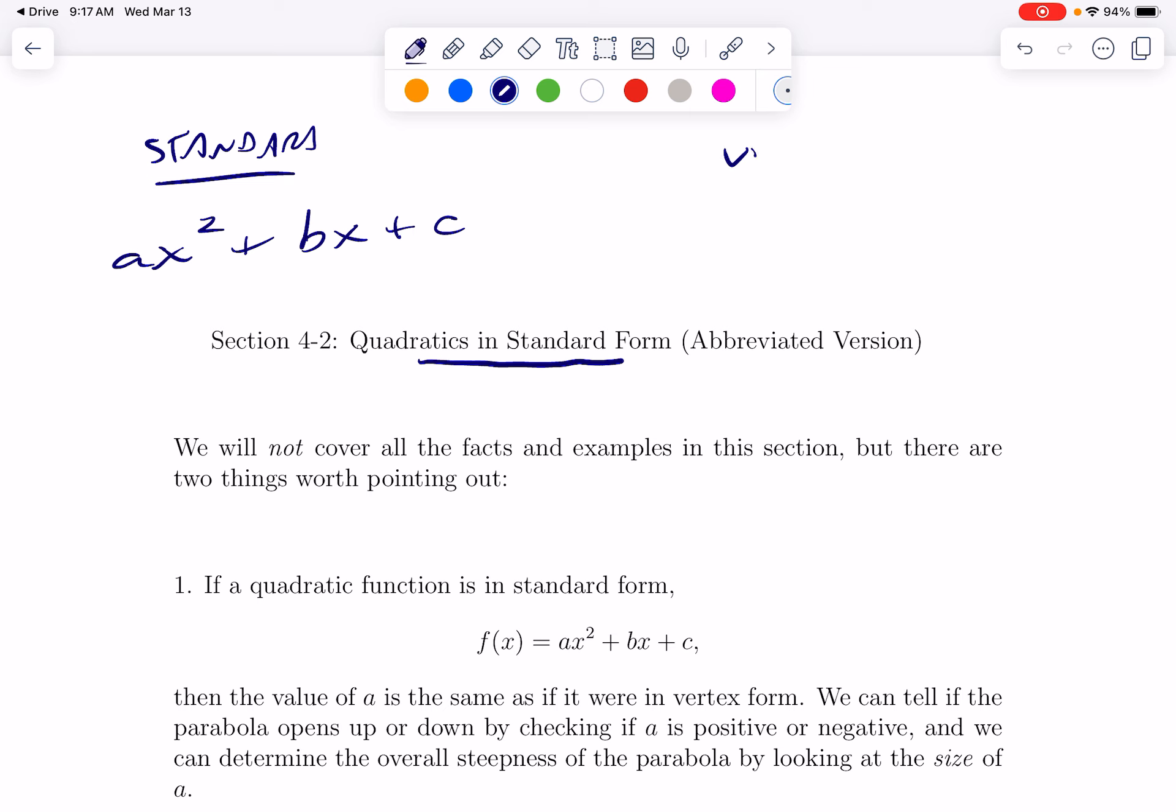There's also vertex form. Vertex form is the one that's a little bit handier for graphing purposes because we can see the shifts. Both of these are pretty common. Both have uses. So here's something to keep in mind. If your quadratic function is in standard form, quadratic functions always have parabolas as their graphs. That's just a universal fact worth knowing.